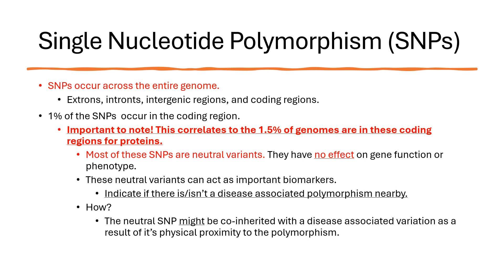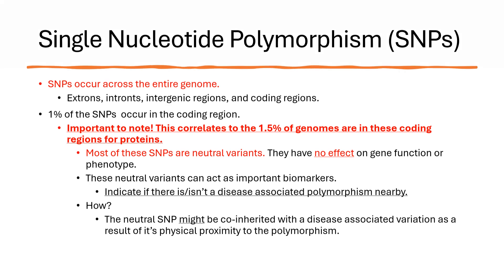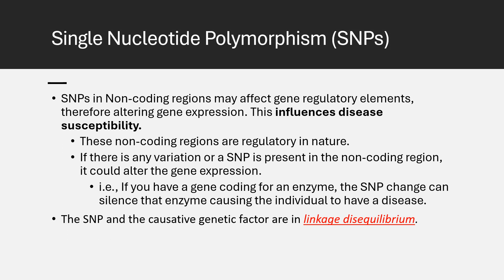However, these neutral variants can still be quite useful — they can act as important biomarkers indicating whether a disease-associated polymorphism might be nearby. Imagine a neutral SNP is physically close to a disease-associated variation; because of their proximity, they might be co-inherited. So even though the neutral SNP itself doesn't cause any issues, it can serve as a signpost that something important is happening nearby. SNPs in non-coding areas might seem inconsequential, but they can significantly affect gene regulatory elements, which in turn can alter how genes are expressed and influence the way our bodies function.